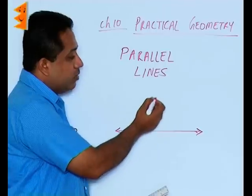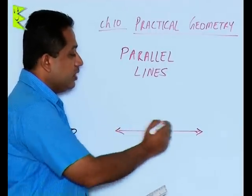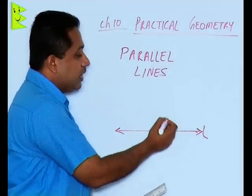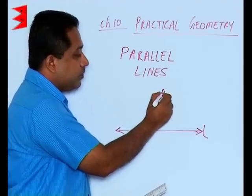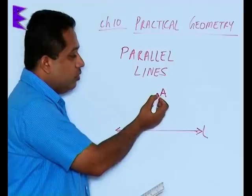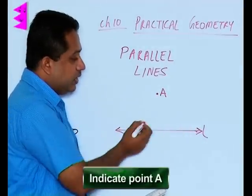So where do you want the line parallel, at what distance we can specify. Let us say if this line is L, we want a line parallel to this passing through a point A. We are going to indicate this point A here. This is not on the line L, it is somewhere else.